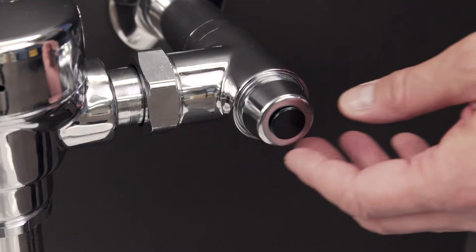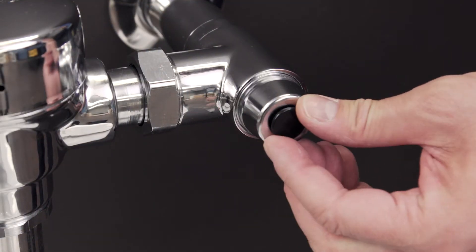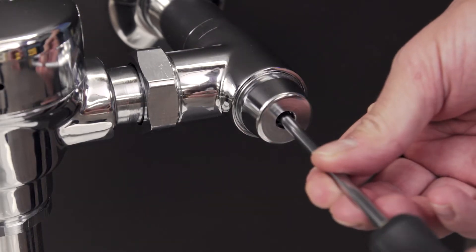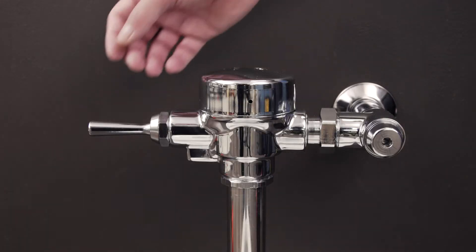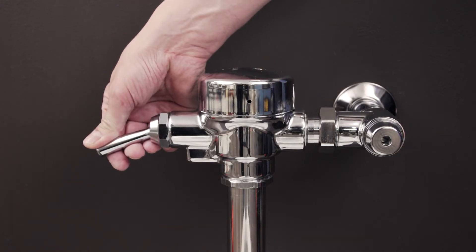First, shut off the water to the flushometer, remove the cap, and use a flat blade screwdriver to turn the screw clockwise until the inlet stop closes. Next, hold down the handle to remove any remaining water.